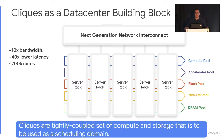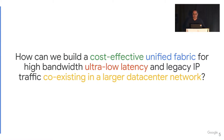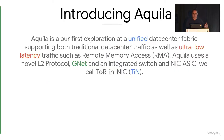The clique is connected to the rest of the data center network using the data center interconnect. The question is: how can we build such a network that's cost-effective and unified for low latency traffic as well as legacy traffic coexisting within the same data center without it being a specialized network? In this work, I'm introducing Aquila, which is our first attempt and exploration towards building a unified data center fabric for ultra-low latency as well as legacy IP traffic.